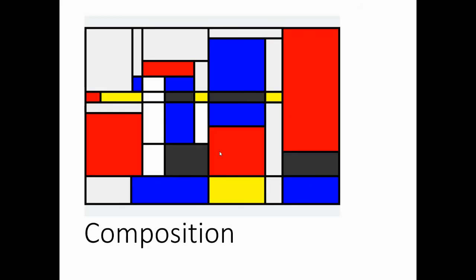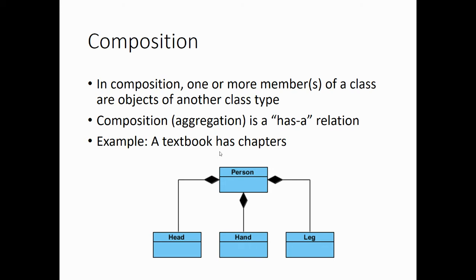Composition is something closely related to inheritance. Composition is not an is-a relationship — it's a has-a relationship. For example, a textbook has chapters, a person has a head, a hand, and a leg. There's actually an esoteric programming language called Piet that allows you to make programs visually that look like Mondrian's artwork and then compile and run them — that's beyond the scope of CS-151, but we do discuss it in CS-450.